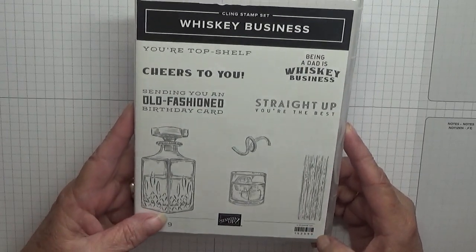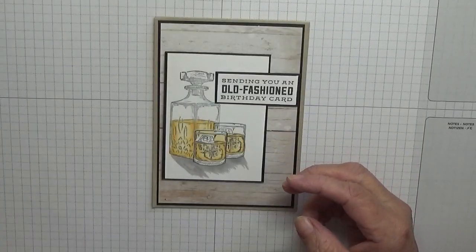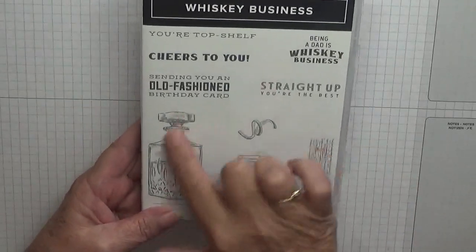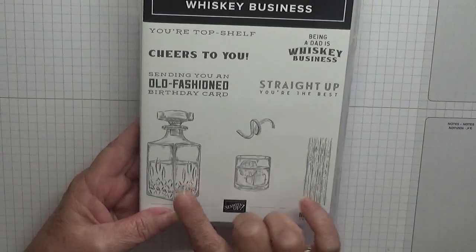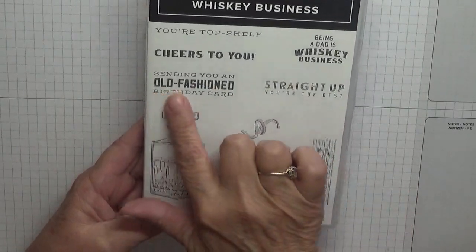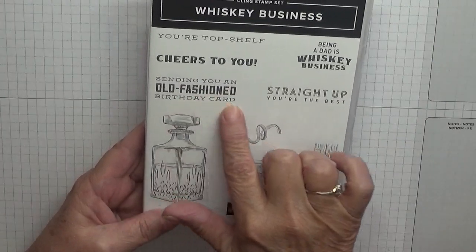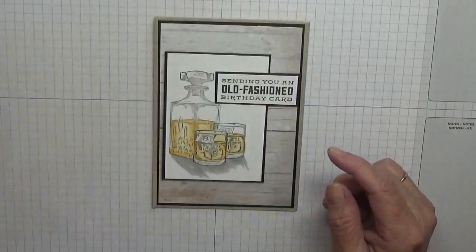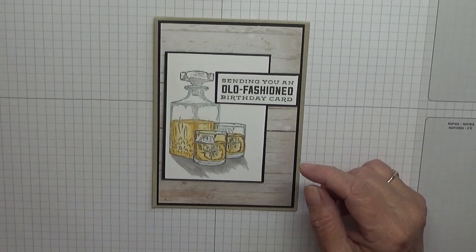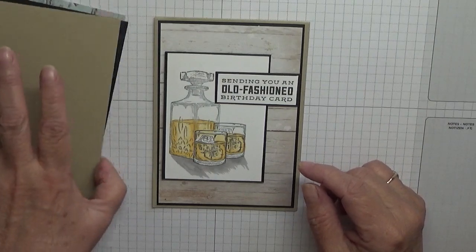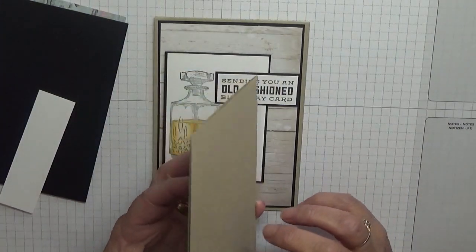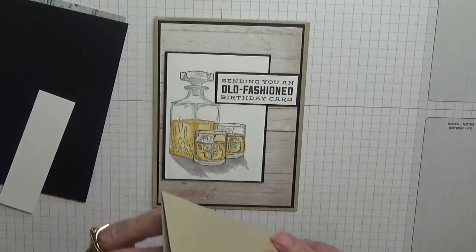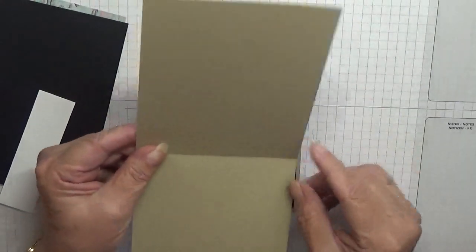To make this, I'm using the bottle or decanter, the glass, and the sentiment 'Sending you an old-fashioned birthday card.' I have a piece of Crumb Cake eleven and three-quarters by four and one-eighth scored and folded in half.